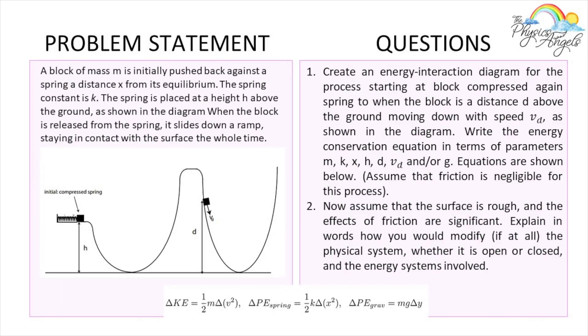This is the problem that we're going to be working on today. We have a block of mass m initially pushed back against a spring, a distance x from its equilibrium. The spring constant is k. The spring is placed at a height h above the ground as shown in the diagram. When the block is released from the spring, it slides down a ramp, staying in contact with the surface the entire time.